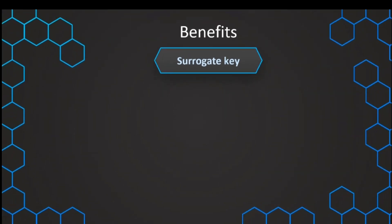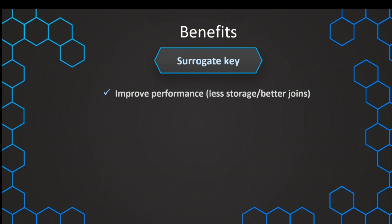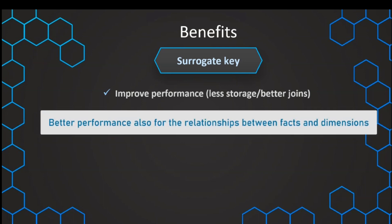Let's talk about what those benefits actually are and why we should always create those surrogate keys. They are much smaller in size. With natural keys, we have those very long and bulky alphanumerical strings. If we just use very small integer numbers, which can be just four bytes in size, we have much less storage. Also, the performance when using that column as an index is much better, and for joins those numbers work much better with higher performance than those alphanumerical keys.